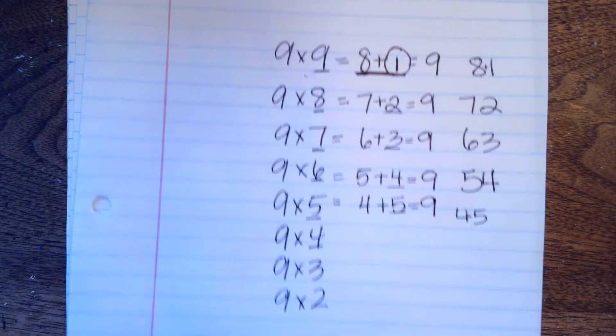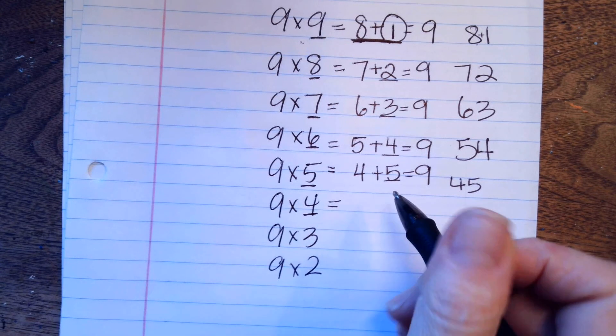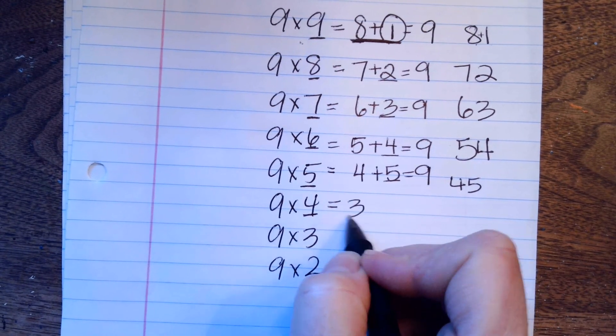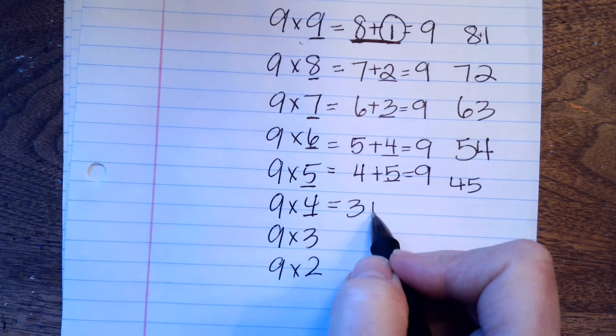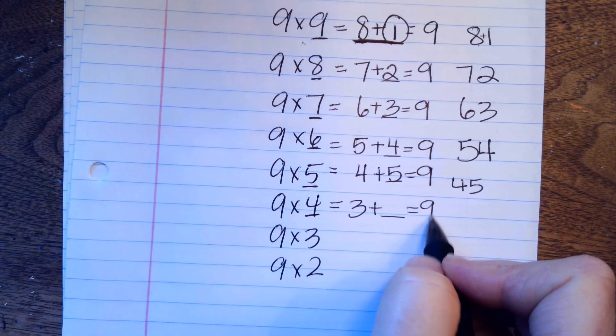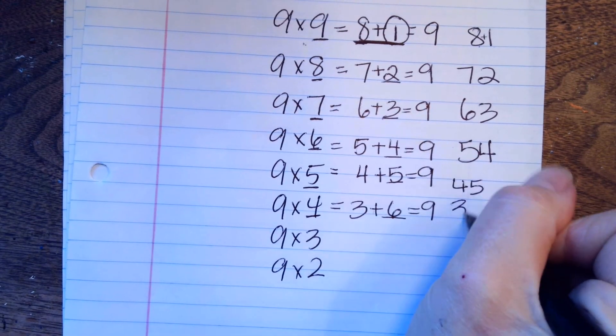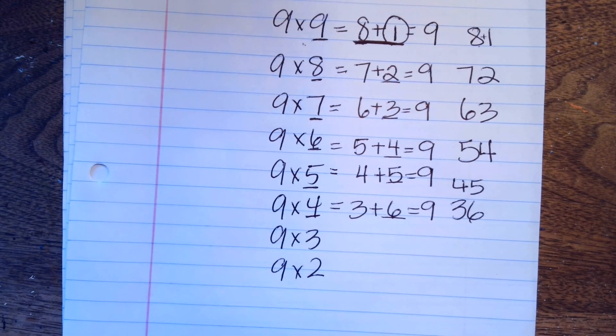Underline first step. 4 minus 1 is 3. Second step. Third step, plus blank equals 9. Last step, fill in the blank. 3 plus 6 equals 9, 36.